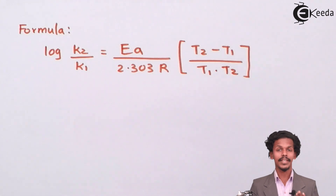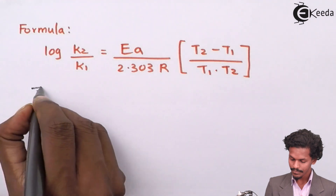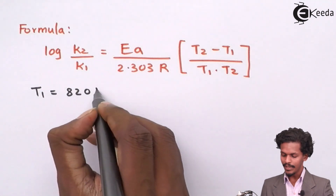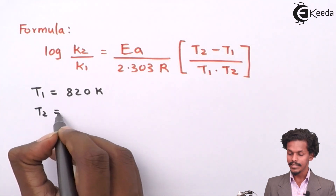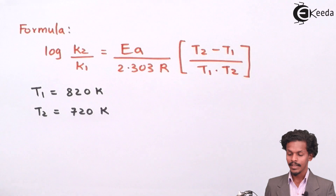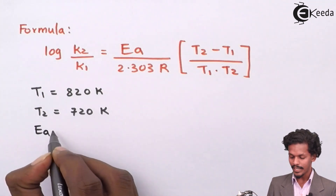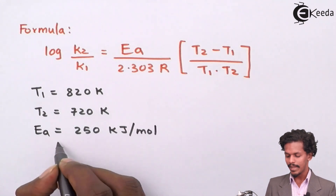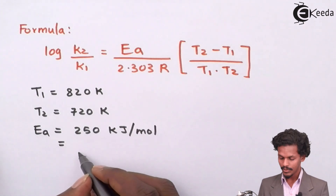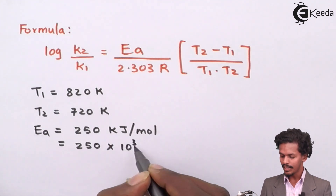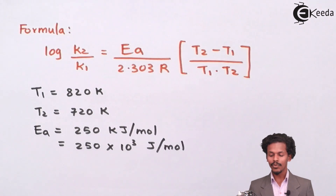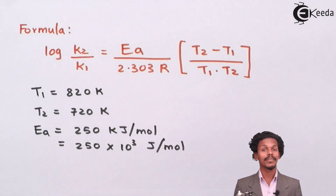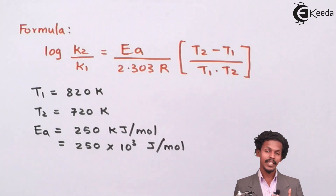For this instance, we know T1 is 820 Kelvin and T2 is 720 Kelvin. We also know the energy of activation, which is 250 kilojoule per mole. For calculation purposes, we convert this into joules: 250 into 10 raised to 3 joules per mole. We substitute these values to get log of K2 divided by K1, which will then help us find the required half-life.